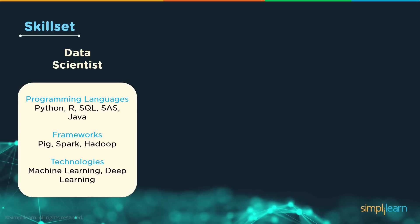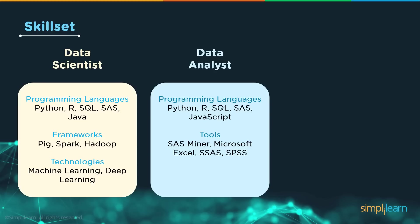Now let's look at the skill sets required for each role. For the data scientist, since this role is more coding-oriented, you need to know programming languages such as Python, R, SQL, SAS, Java, and so on. You also need to be well-versed with big data frameworks such as Pig, Spark, and Hadoop. Data scientists also need to be well-versed with machine learning, deep learning, and other similar technologies.